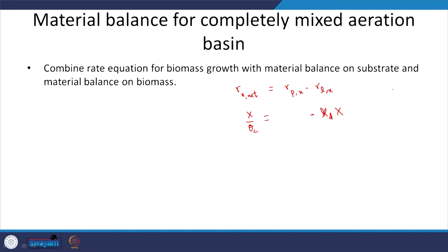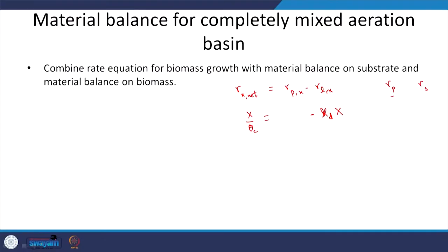The microbes are being produced when the substrate is being degraded — while the food is being degraded, part of it is used for cell synthesis and the microbes are produced. So the rate of production of the microbes depends upon the rate of loss of the substrate, which we calculated earlier as r_net_s. Only a fraction of r_s will go towards cell synthesis, represented by the yield coefficient Y — giving an idea of how much biomass is produced per unit of substrate consumed.